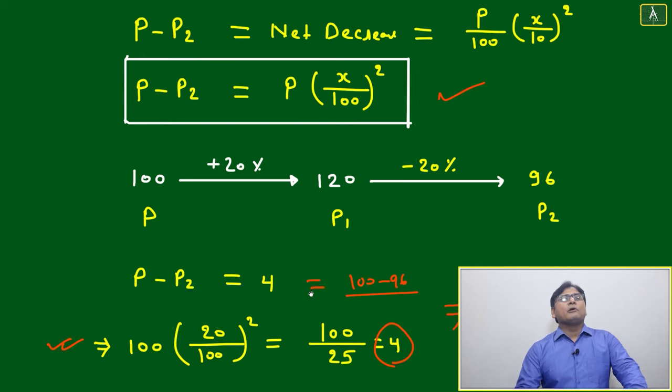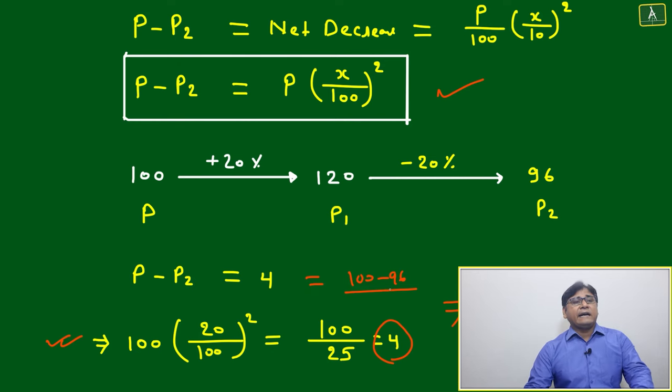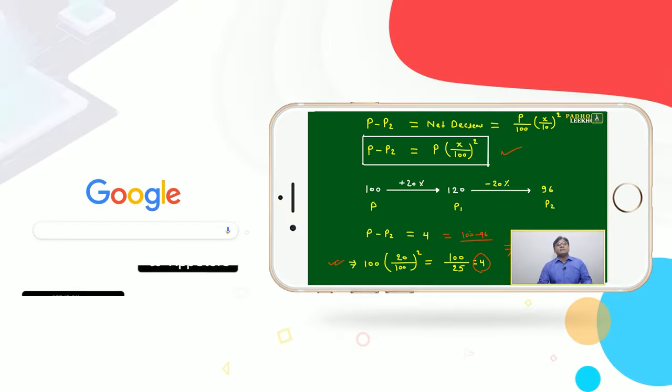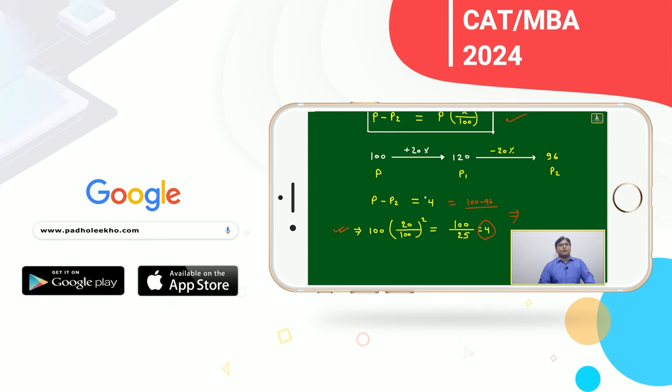Okay, then this formula also you can use because here this number is easy, then direct getting this 100, 96. 96 is very easy to calculate. But in questions, this will not given number as a 120. It will be given some different complex.